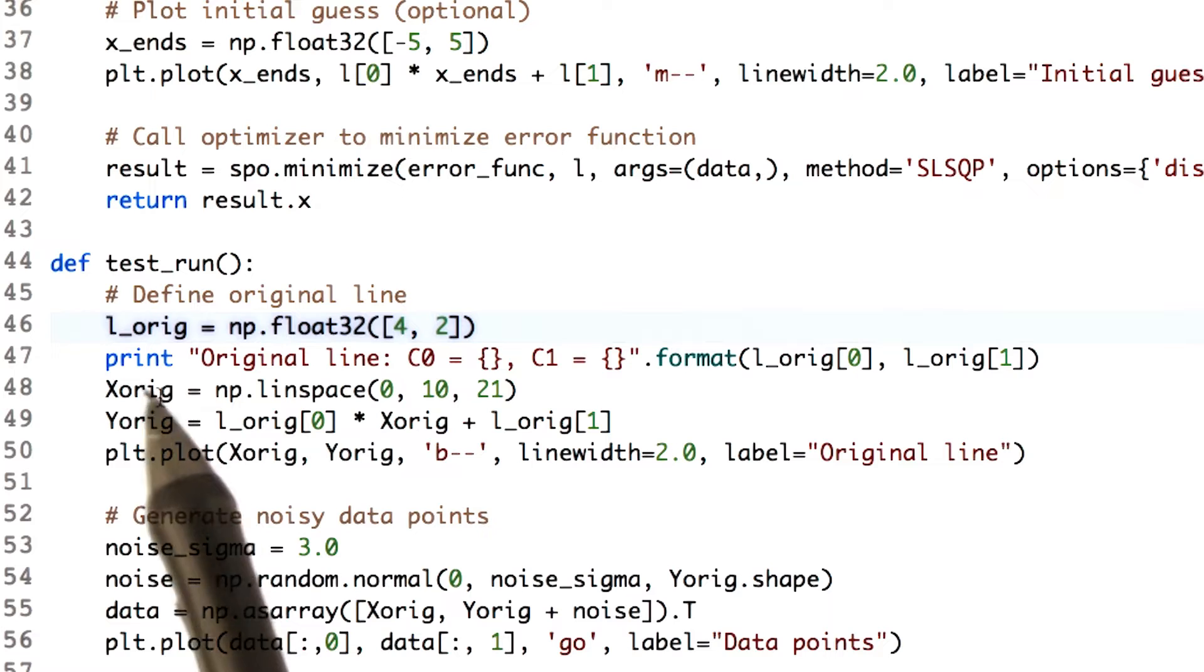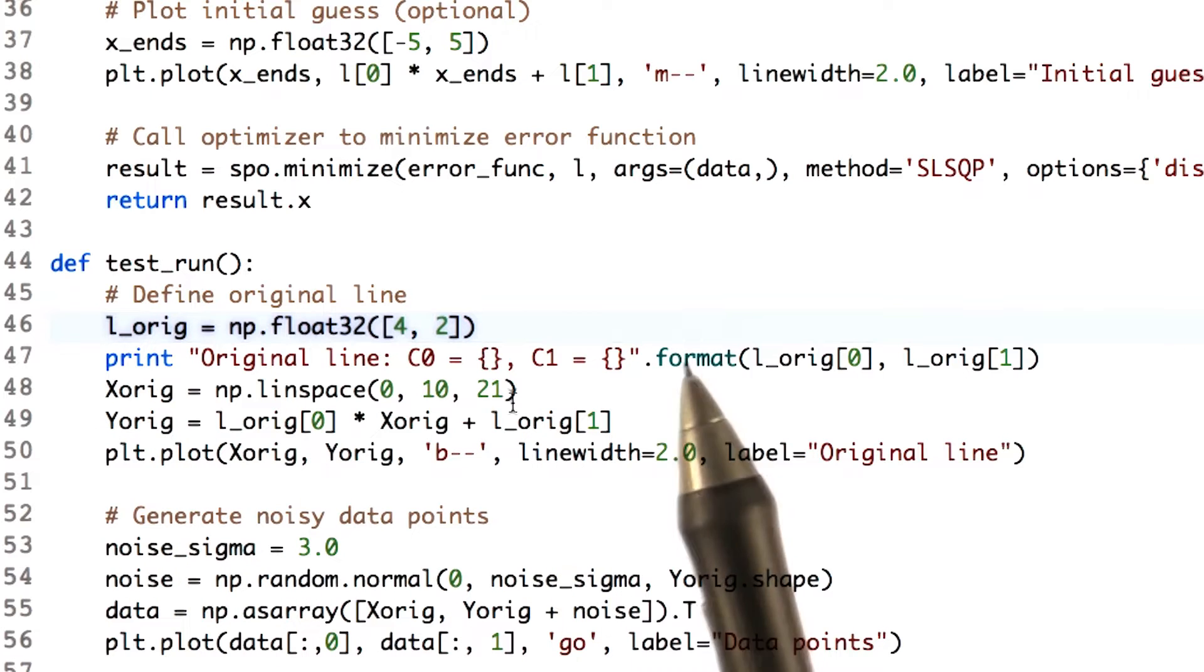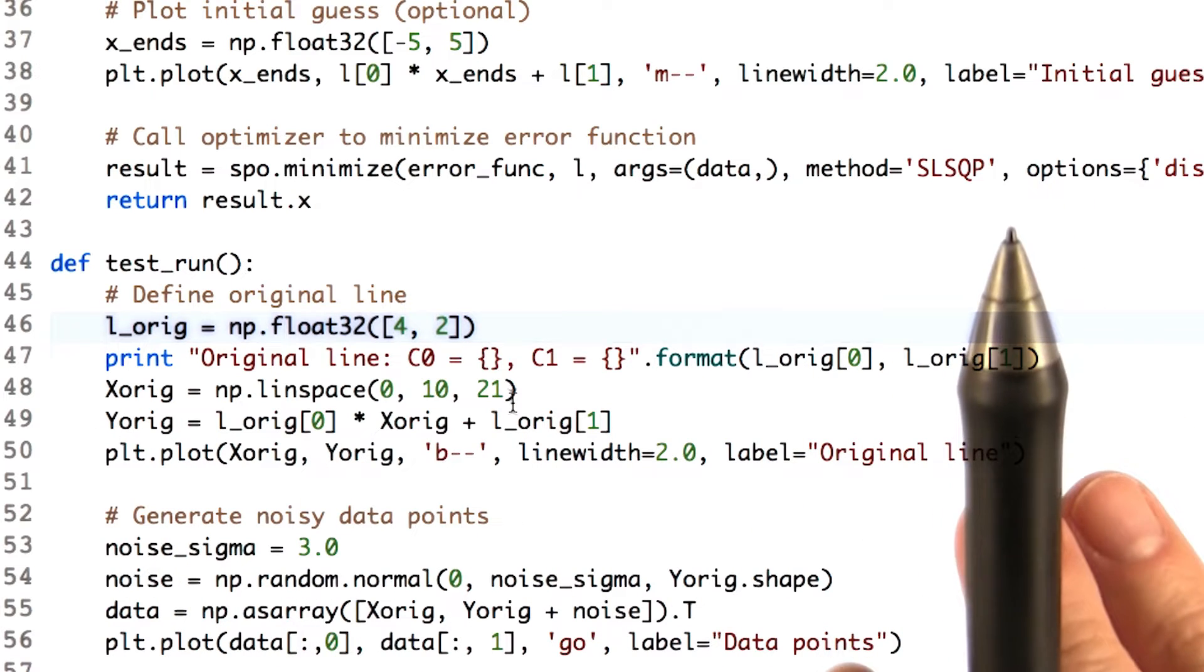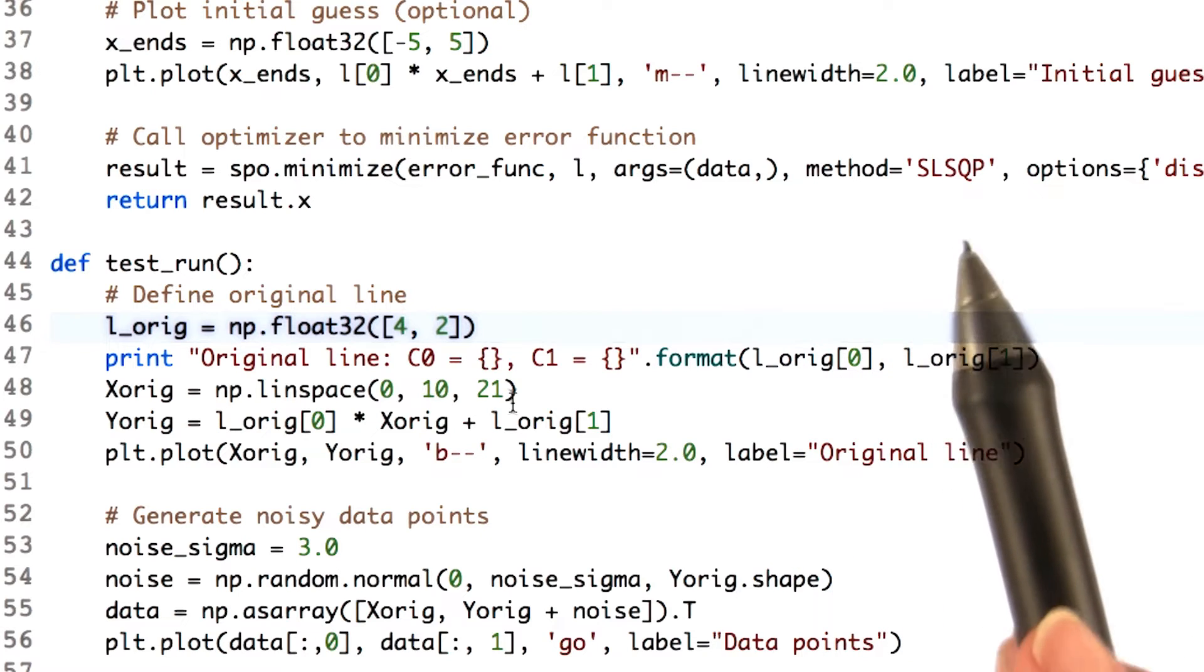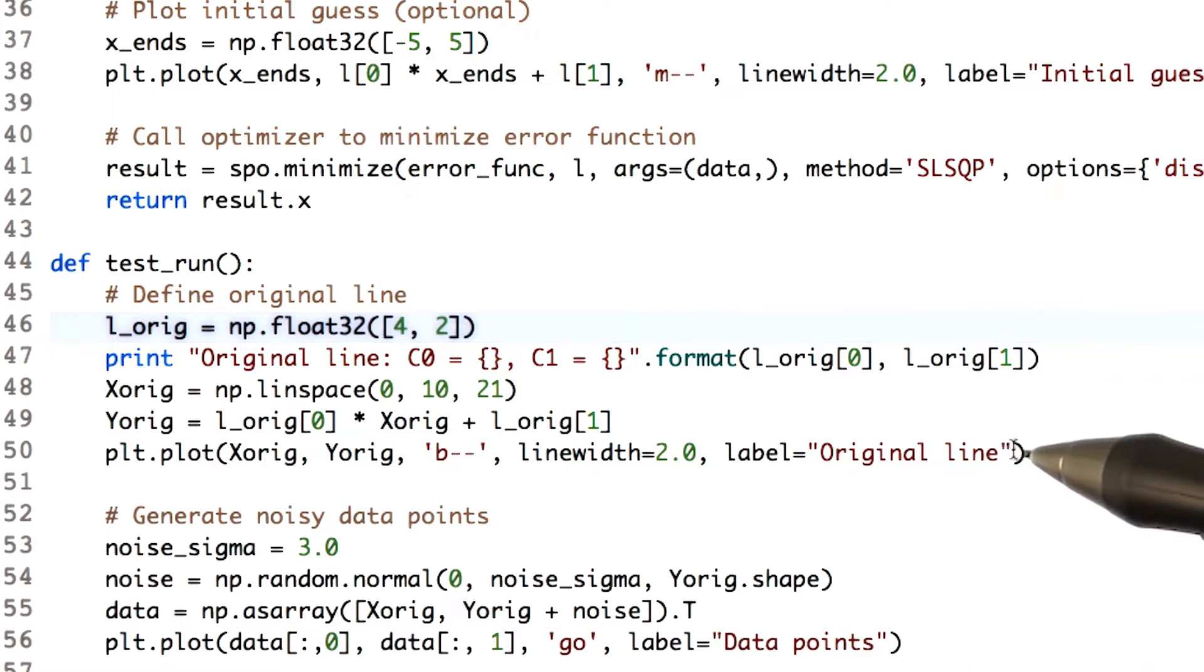Here we generate x and y values. Again, keep in mind, our minimizer doesn't know these, but we're just generating them so we can look at them. And we're plotting it for looking at it later.